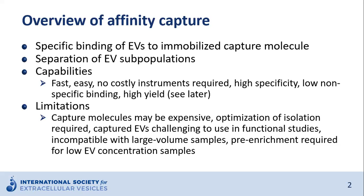There are of course also limitations, such as sometimes costly ligands are required, such as antibodies. Several parameters must be optimized for efficient isolation — an example is the number of magnetic beads. Using immuno-isolated EVs in functional studies is challenging, and only EV subpopulations are isolated, not all EVs. This method is also not compatible with large volume samples or samples with low EV content.